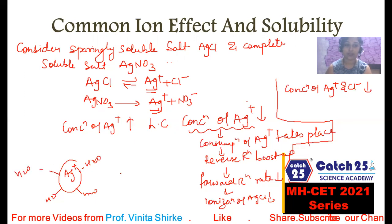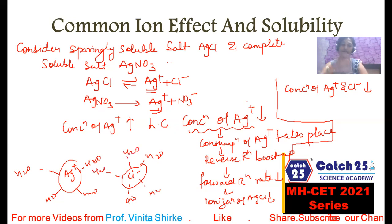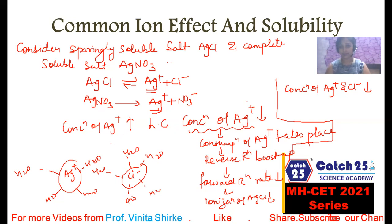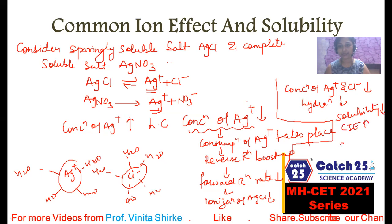In solution, Cl⁻ ions get surrounded with water — we say hydration occurs. So when they make bond with water they get soluble. But here the concentration of ions is less. If ion concentration is less, it means solubility is also less. Concentration of Ag⁺ and Cl⁻ decreases, hydration decreases, and solubility also decreases. So the relation between Common Ion Effect and solubility: Common Ion Effect increases → solubility decreases. They are inversely proportional to each other.